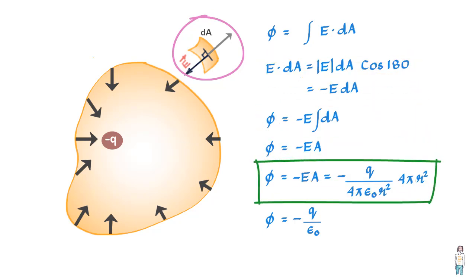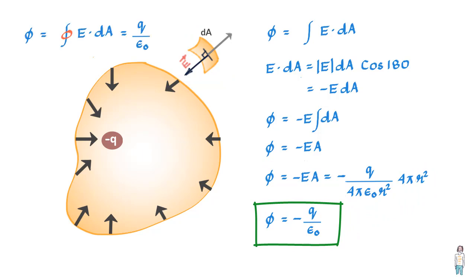So the integral becomes minus Q by epsilon naught. So you see, to find the net flux through any surface, you just need to put the value of the net charge with a proper sign and you'll get the net flux.